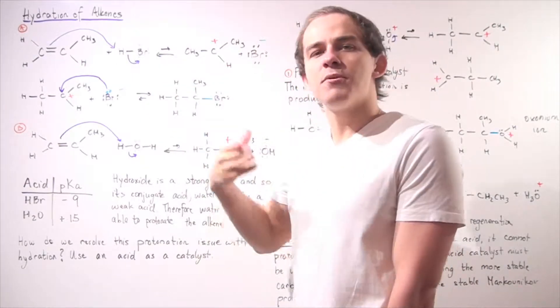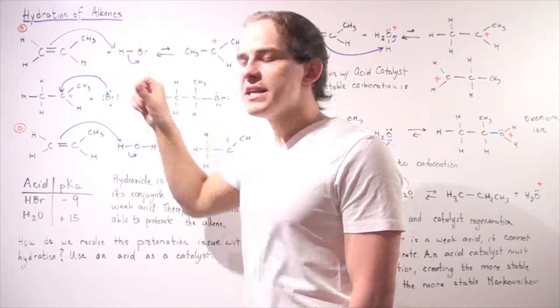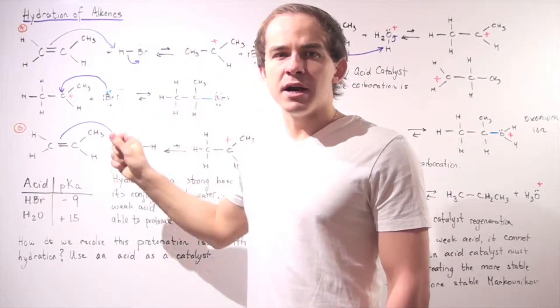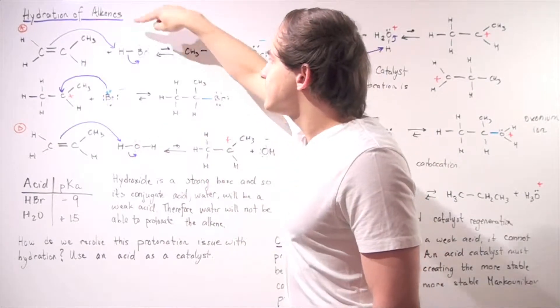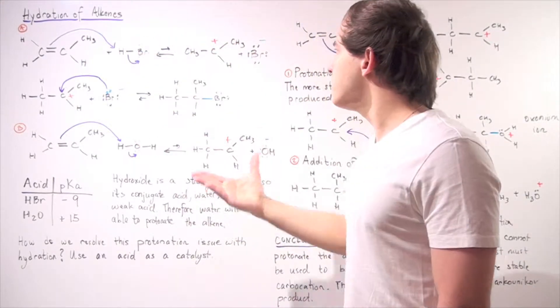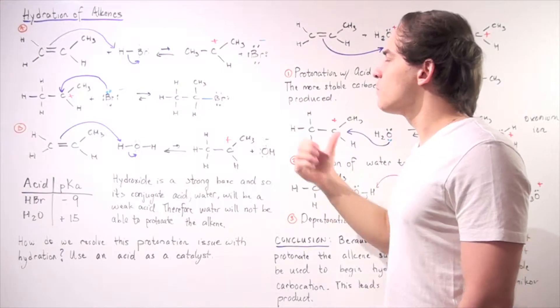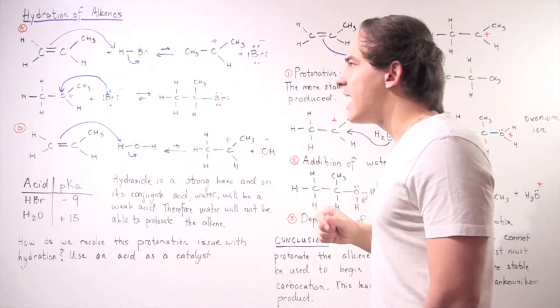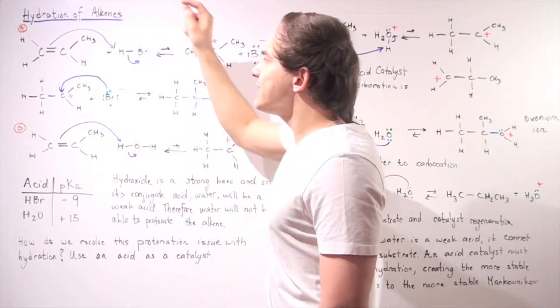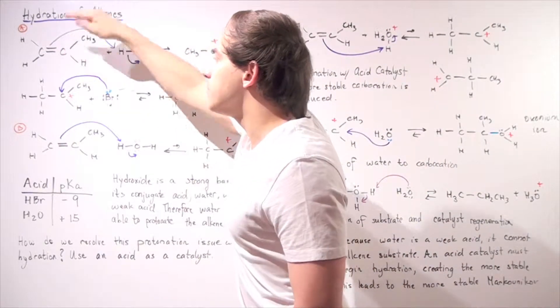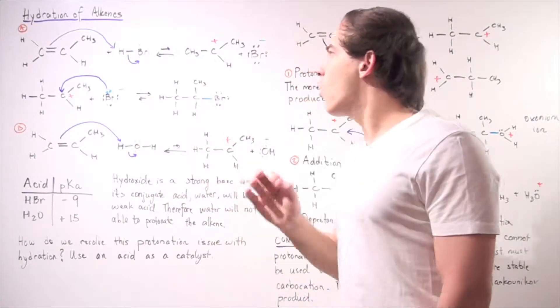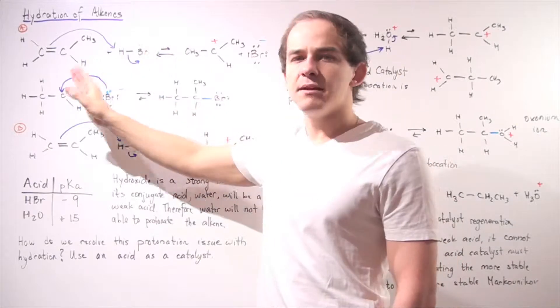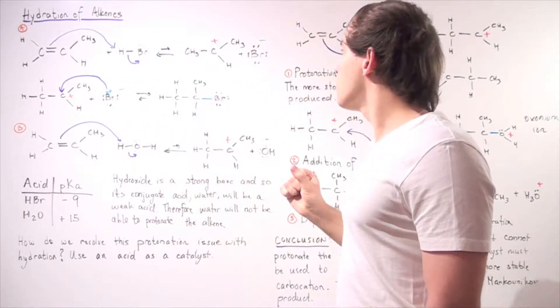So our reaction is known as hydrohalogenation. And in the first step, we have the protonation of this alkene. What happens is the pair of electrons in the pi bond of the double bond attacks this H, displacing this bromine, forming the following two products. So our carbocation intermediate and our bromine anion. So notice the H goes onto this carbon and not this carbon because we want to form the more stable secondary carbocation and not the less stable primary carbocation.